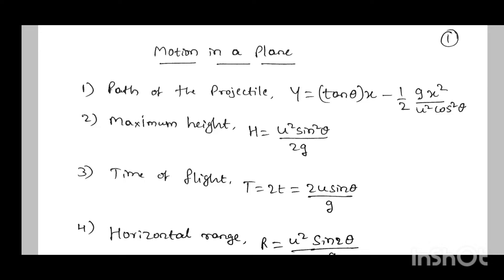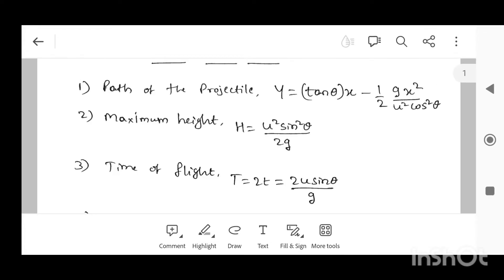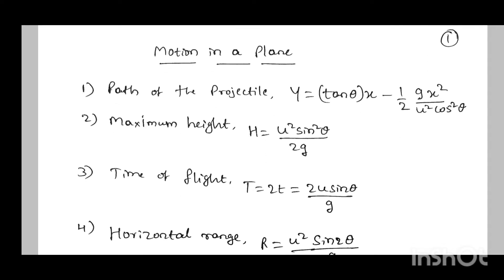Those who are watching my videos for the first time, do like and subscribe for more updates. First, I will go through the chapter Motion in a Plane. The first formula is the path of a projectile: y equal to tan theta into x minus half g x squared divided by u squared cos squared theta. It is in the general form y equal to ax plus bx squared.